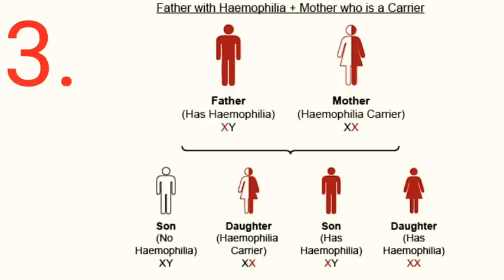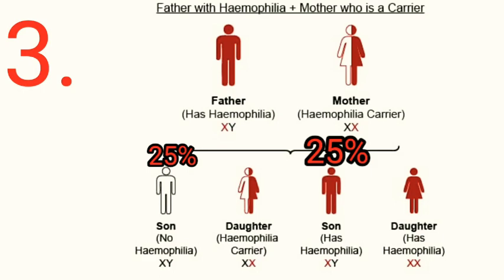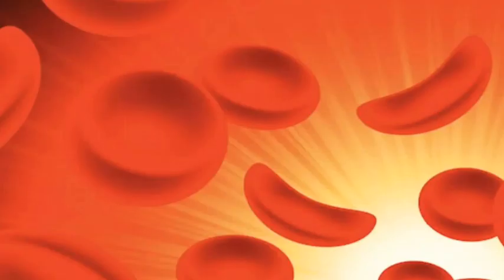Case 3: father has hemophilia and mother is a carrier. The father's sex chromosomes are labeled XY with the X chromosome carrying the hemophilia gene. If the baby gets the Y chromosome it will be a boy; if the boy then gets the mother's X chromosome with the hemophilia gene, he will have hemophilia. Results: 25% chance of a son with hemophilia, 25% chance of a son with normal blood, 25% chance of a carrier daughter, and 25% chance of a daughter who has hemophilia.